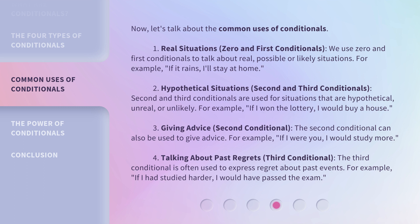3. Giving advice — second conditional. The second conditional can also be used to give advice. For example, "if I were you, I would study more." 4. Talking about past regrets — third conditional. The third conditional is often used to express regret about past events. For example, "if I had studied harder, I would have passed the exam."